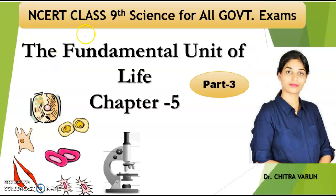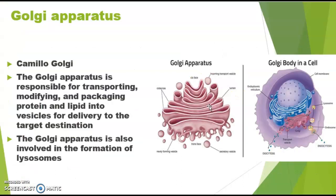Good morning everyone. This is NCRT class 9th science chapter 5, 'The Fundamental Unit of Life', part 3. We had already discussed most of the organelles like endoplasmic reticulum, nucleus, cytoplasm, cell membrane, and cell wall. So now let's move on to the Golgi apparatus.